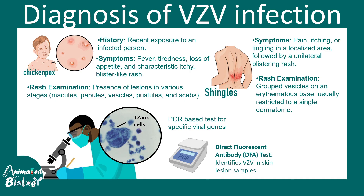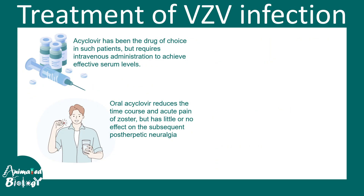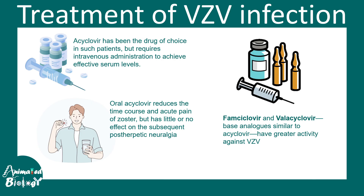Symptoms include pain, itching, and tingling in the localized area in case of shingles. Rash examination is important: if the rash has different stages simultaneously — macules, papules, scabs, pustules — it is most likely chickenpox. If all lesions are in only one category, it is more likely smallpox. Antiviral medications such as oral acyclovir reduce the time course of acute pain; famciclovir and valacyclovir are also base analogues that work well against varicella zoster virus.